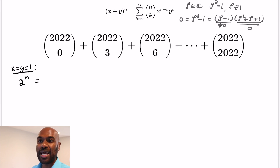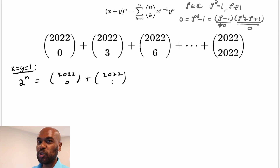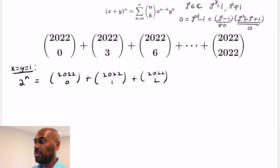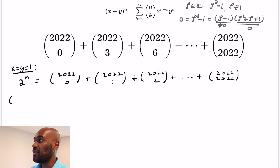If we substitute x equals y equals 1, that tells us 2 to the n equals the sum of all the binomial coefficients: 2022 choose 0 plus 2022 choose 1 plus 2022 choose 2, all the way to 2022 choose 2022. Now we're going to plug in values of x and y using the zeta we developed earlier.